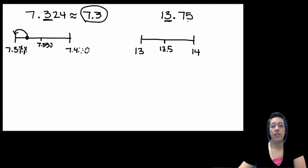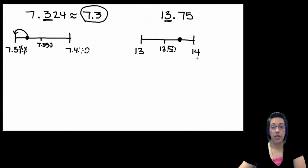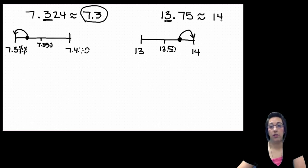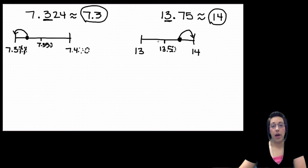We have thirteen and seventy-five hundredths. I can put in my invisible zero so I can see where it goes. Seventy-five hundredths is more than fifty hundredths, so that's going to go right about here on the number line, and I'm going to round up to fourteen. So that is approximately fourteen. Notice again that my ones place is the last digit, so I drop all of my decimal places behind it.